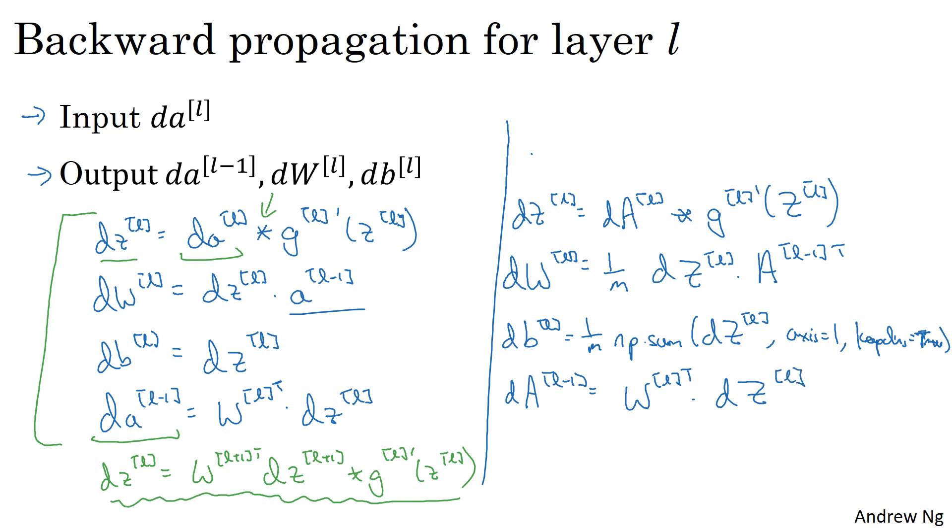So this allows you to input this quantity dA over here and output dW^(l), db^(l), the derivatives you need, as well as dA^(l-1). That's how you implement the backward function.